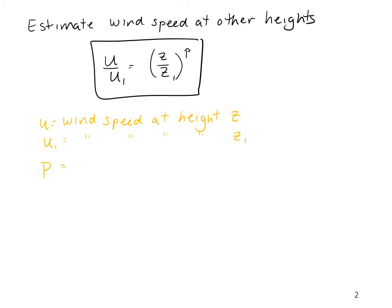And p is some number between 0.07 and 0.6 depending on meteorological conditions and surface roughness, and it's equal to 0.15 under adiabatic or neutral conditions.